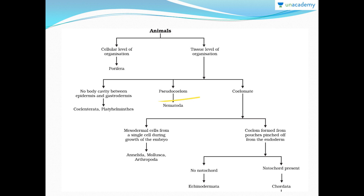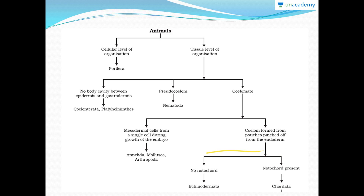Animals with a false coelom or pseudocoelom are Nematoda. Those which have a true coelom are further divided: if the coelom is formed from mesodermal cells originating from a single cell during embryo growth, those are grouped individually — these are Annelida, Mollusca, and Arthropoda. Furthermore, if coelom is formed from pouches pinched off from the endoderm, they are divided into those having no notochord — Echinodermata — and those having a notochord, which are chordates. We will study chordates individually; first we will study up to Echinodermata.